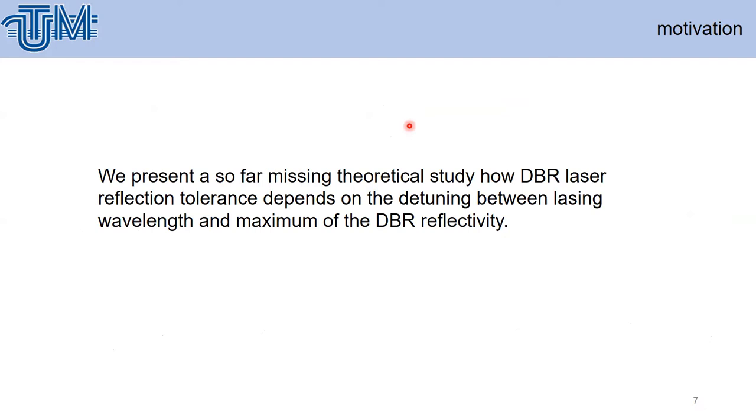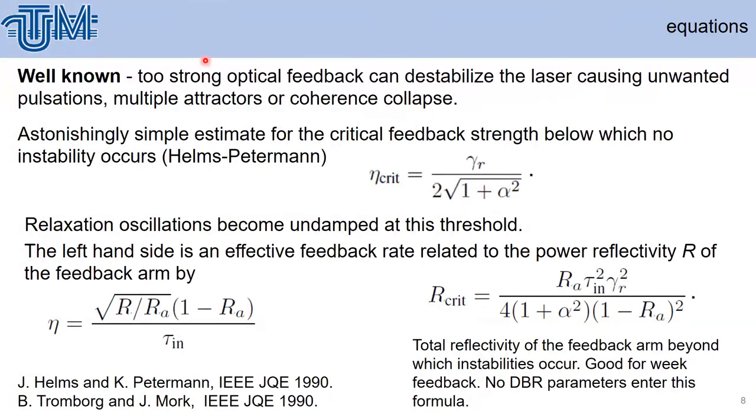Next, we present a so far missing theoretical study: how DBR laser reflection tolerance depends on the detuning between lasing wavelength and maximum DBR reflectivity. We found that such investigation is not presented in literature. It is well known that too strong optical feedback can destabilize the laser causing unwanted pulsations, multistable attractions, coherent collapse, or even chaos.